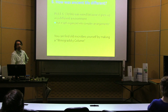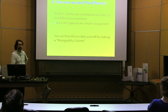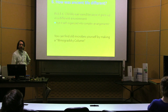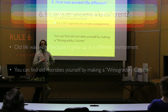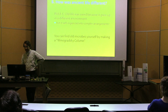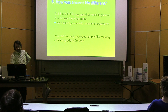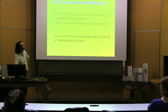So on to rule six. Once ancient life happened, however that happened, how was it different? I'm going to say ancient life was different in one important way: it was weird. It had weird chemistry and used weird parts of the periodic table. Now that's a judgment call — I don't think they're going to feel bad that I'm calling them weird. But it looks different to this chemist.